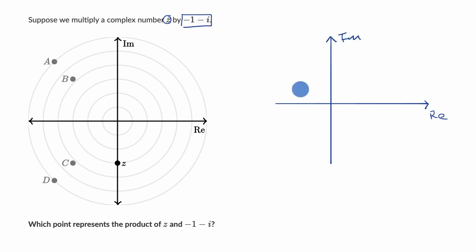And -1 - i. So that's -1 and then -1i. So it would go right over there. It would be that right over here.